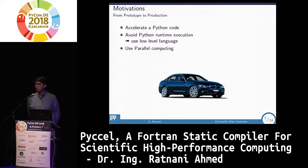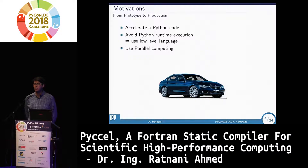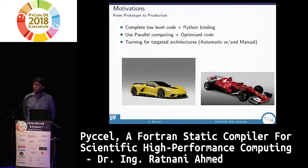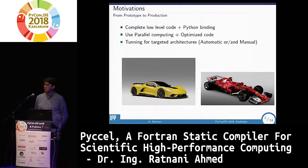Maybe you also want to use parallel computing because you are handling big data, you use a lot of memory, and maybe on your computer it's not running without distributing the memory. Maybe what you are interested in is something really, really fast — you want to go even to exascale — and then you want low-level code with Python bindings, parallel computing, optimized code, and the ability to tune your code on different architectures, either manually or automatically.